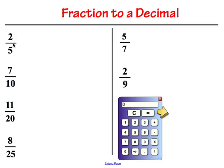On the left side, I have several fractions. If we look at the denominators, here we have a 5, here we have a 10, here we have a 20, and here we have a 25. All of these denominators can be made into 10 or into 100, and that's our goal — we want our denominator to end with a 10 or a 100.